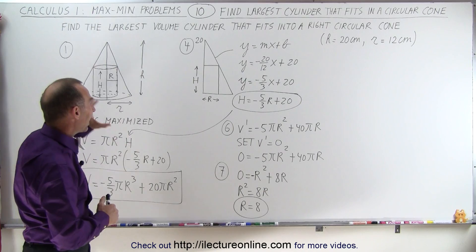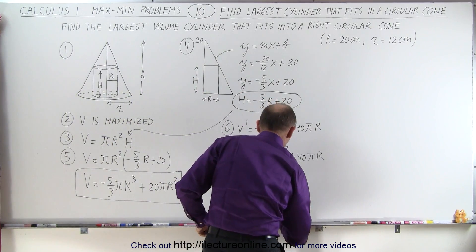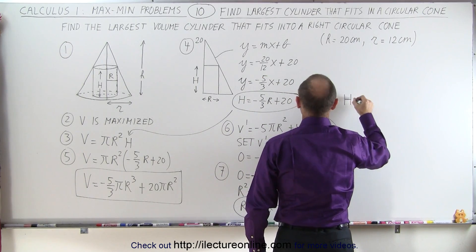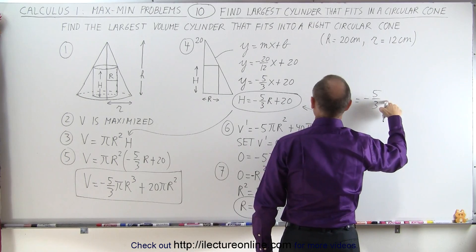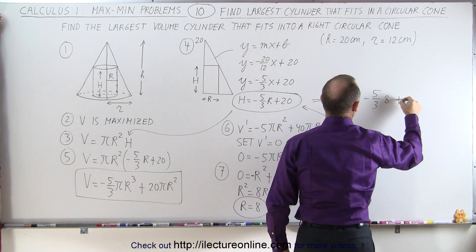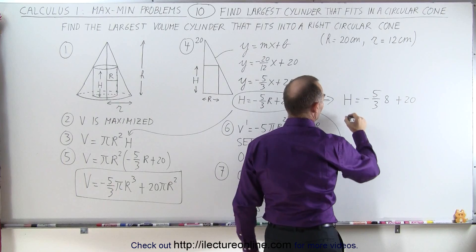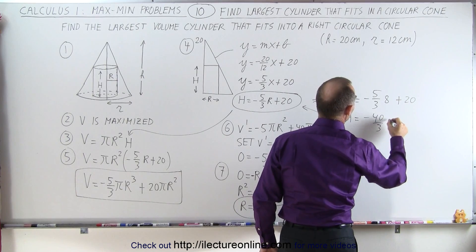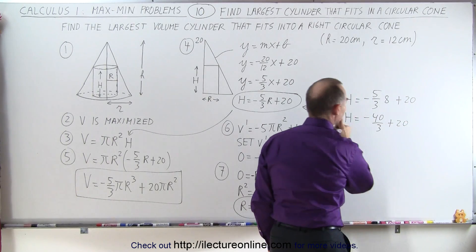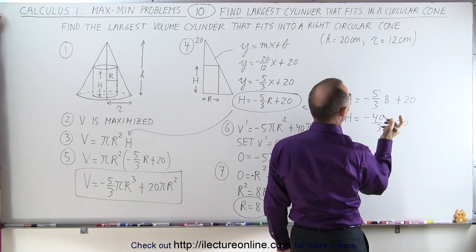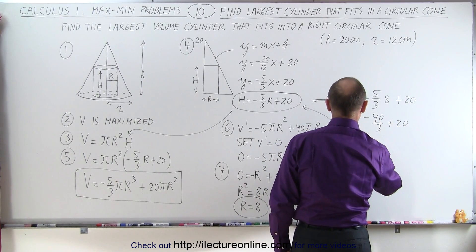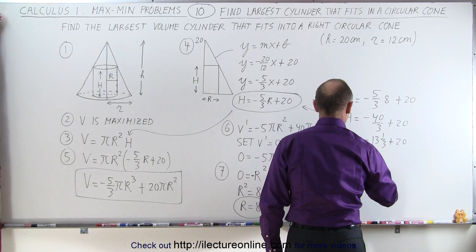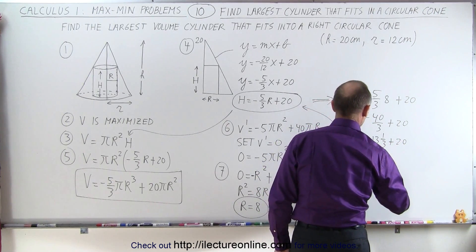Now we need to find the height of the cylinder, so we plug R equals 8 back into the constraint equation. The height equals minus 5 over 3 times 8 plus 20, which is minus 40 over 3 plus 20. That's minus 13 and a third plus 20, so the height equals approximately 6.67.